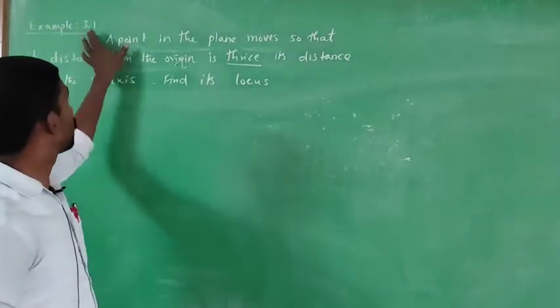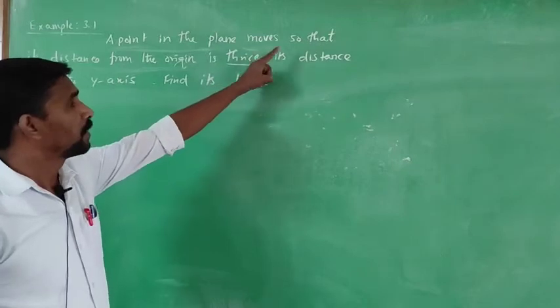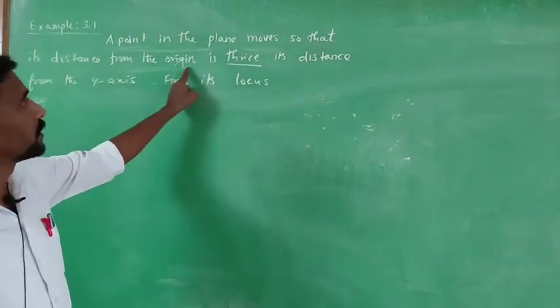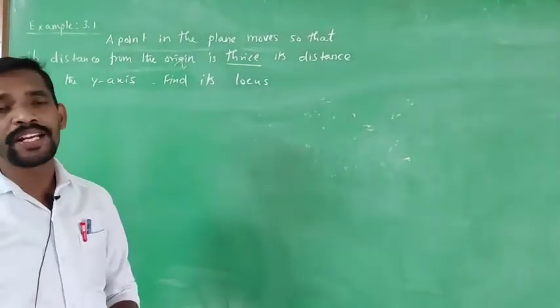This is example 3.1. A point in the plane moves so that the distance from the origin is thrice its distance from the y-axis. Find the locus.